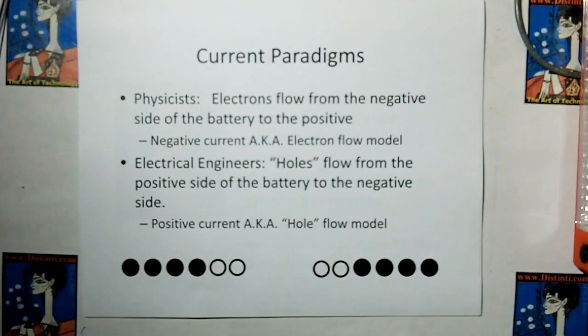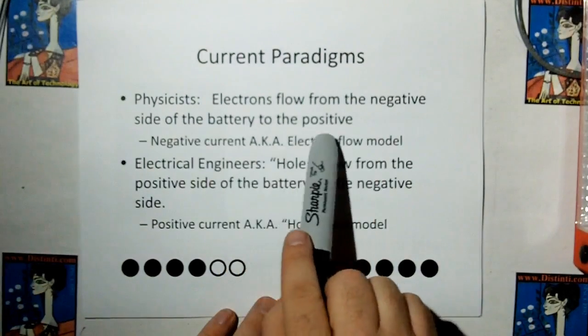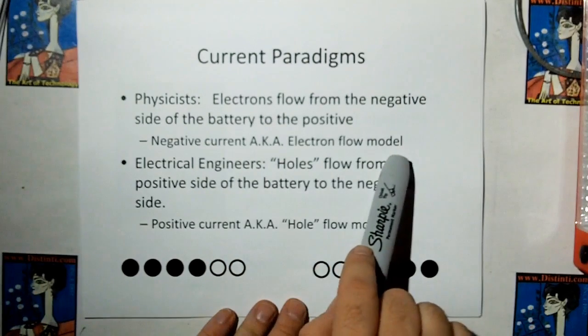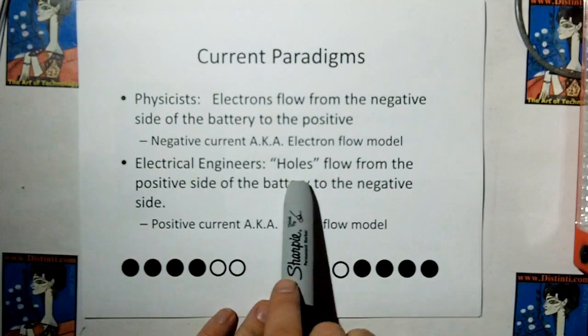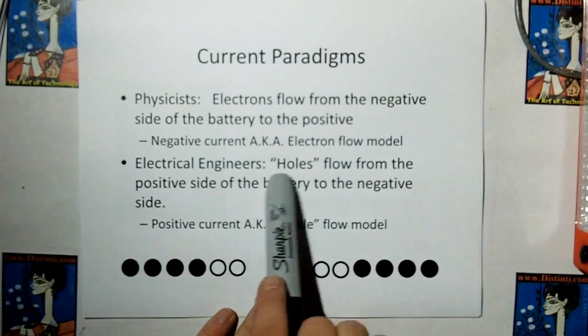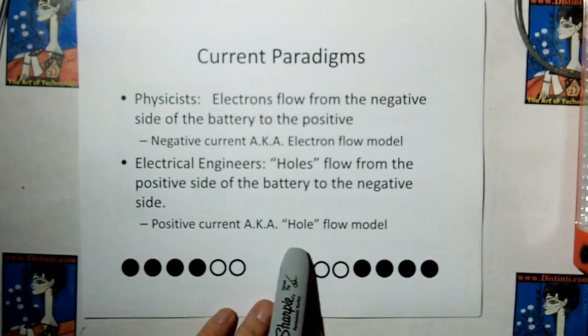Current paradigms. Physicists use the electron flow from the negative side of the battery to the positive. That's called negative current, also known as electron flow model. Electrical engineers use holes. The positive charges flow from the positive side of the battery to the negative side. That's called the positive current model, also called the hole flow model.